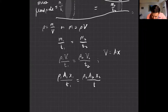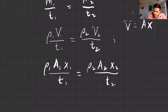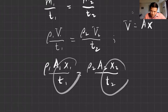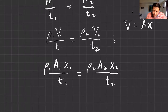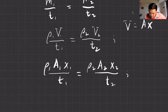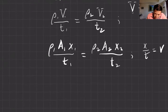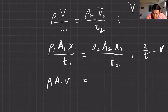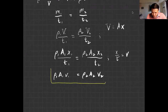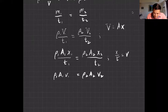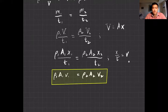Notice that distance per unit of time is actually velocity. So x over t is the velocity of flow. Substituting those values, we get: density one times area one times velocity one equals density two times area two times velocity two. This is one version of your equation of continuity: ρ₁A₁v₁ = ρ₂A₂v₂.